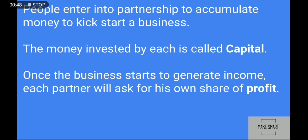Once the business starts to generate income, each partner will ask for his own share of profit. For example, if a business requires ten thousand and two friends invest five thousand each, mixing to ten thousand and investing in the business — after one year they get a profit of six thousand from ten thousand. Since both invested equally, five thousand each, the six thousand profit is also divided equally between them.